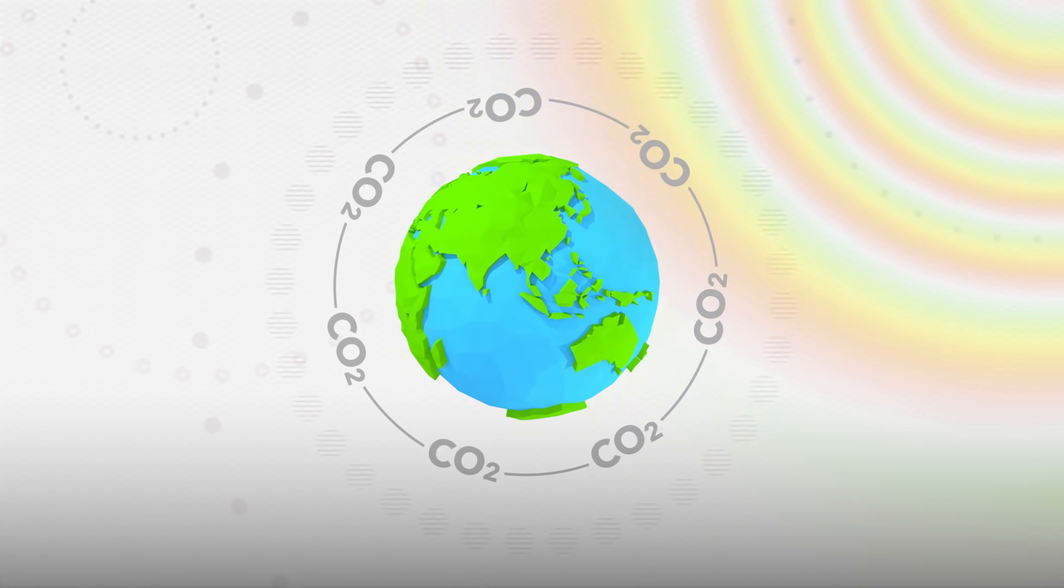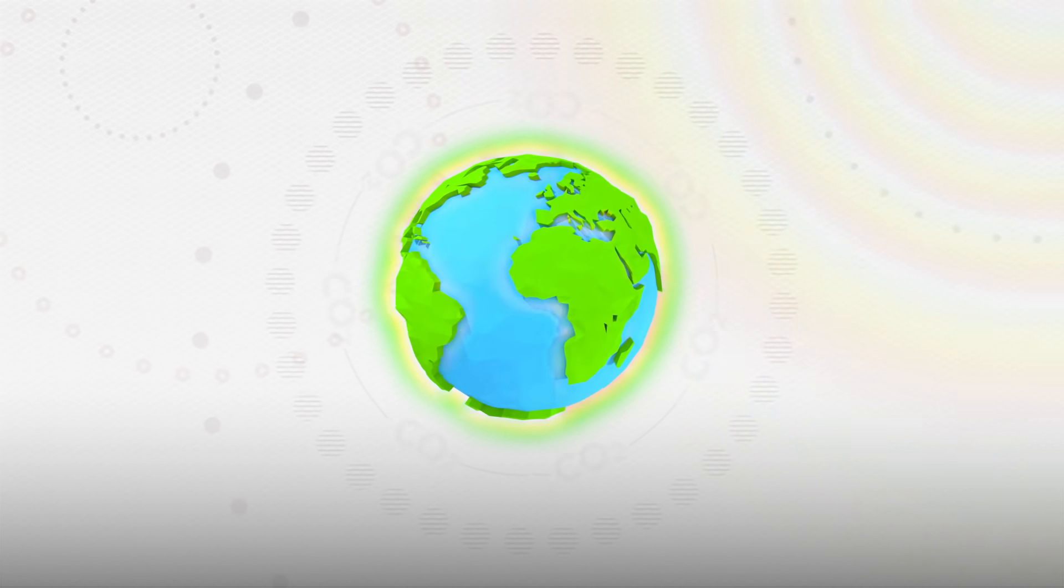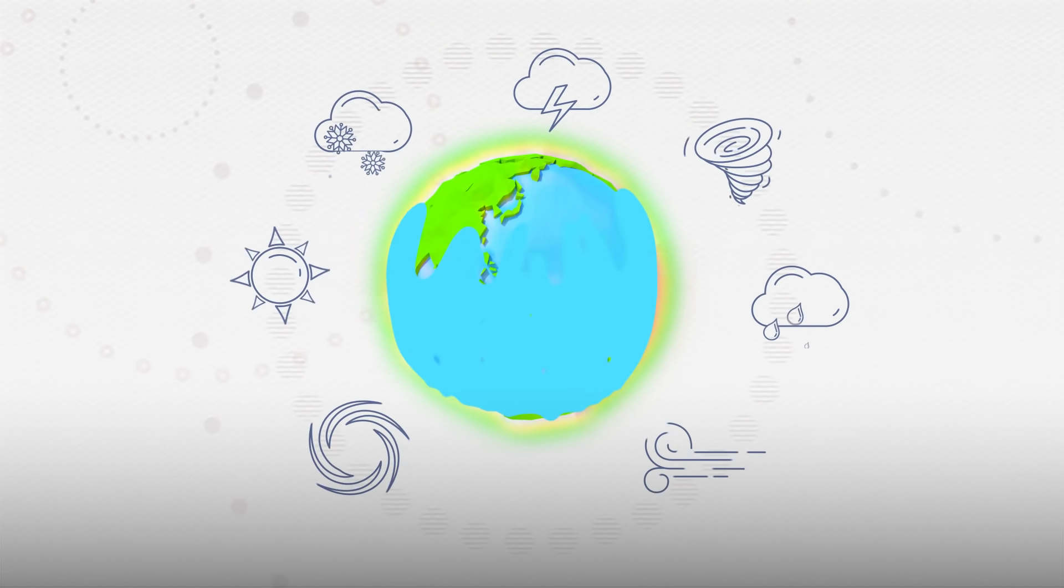CO2, along with a handful of other gases, traps sunlight, heating up the planet. This is causing extreme weather, rising sea levels, and droughts. It also makes people sick. It's pretty bad.